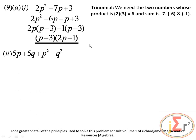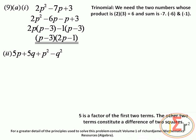We have 5p plus 5q plus p squared minus q squared and need to factorize it completely. There is no problem seeing a common factor of 5 in the first two terms, giving 5 times (p plus q). The second pair p squared minus q squared is a difference of two squares, which factorizes as (p plus q)(p minus q). So we have 5(p plus q) multiplied by (p plus q)(p minus q).